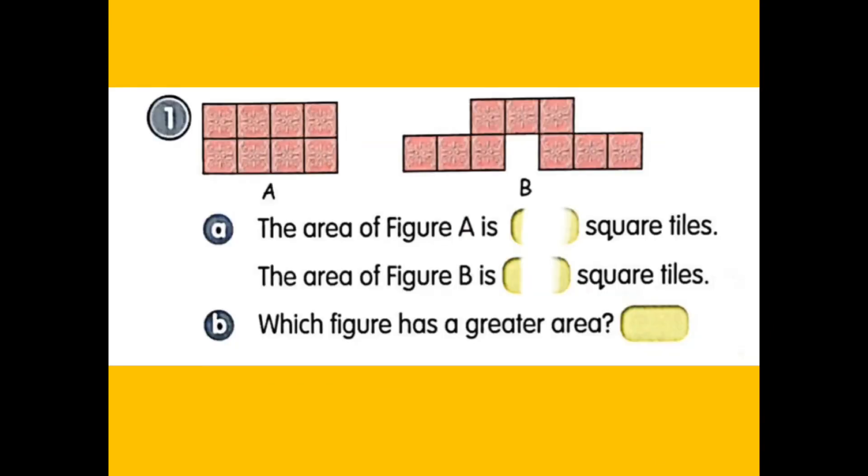Look into your pupil's book, page 135. What is the area of figure A and B? To be sure of our answers, let us write the numbers inside the square tile as we count. Always do the same thing so that you don't miss any square tile as you count. The area of figure A is eight square units, while the area of figure B is nine square units. Which figure has a greater area? Correct! Figure B.